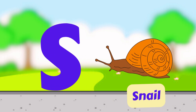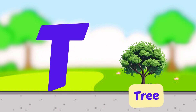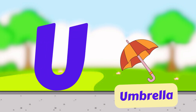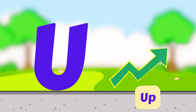R is for Rat. R, R, Rat. R is for Rabbit. R, R, Rabbit. S is for Sun. S, S, Sun. S is for Snail. S, S, Snail.